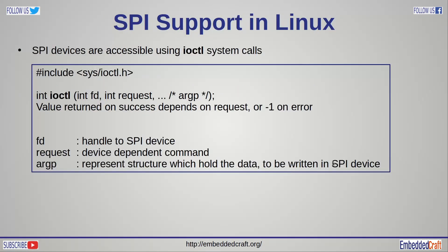Let us see how to access an SPI device in Linux. In Linux, the IOCTL system call is used. Help on this system call is available in Linux man pages. Basically you need to open the SPI device using the open call, pass the handle to the IOCTL system call, then provide data for the SPI device. Data needs to be given in the form of a structure, and the structure pointer is the argp argument. Interpretation of that data depends on the request argument.